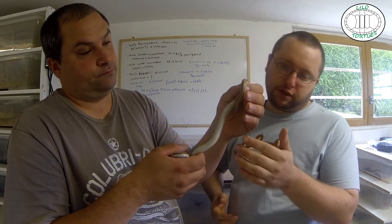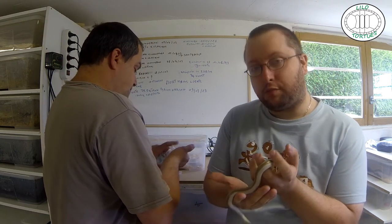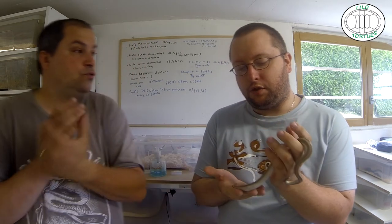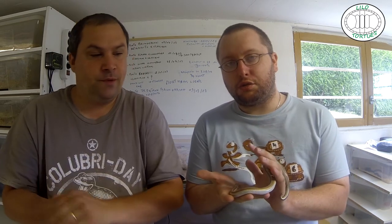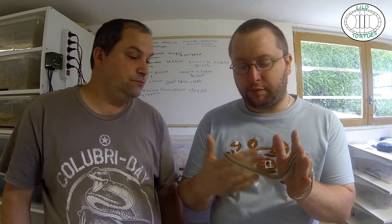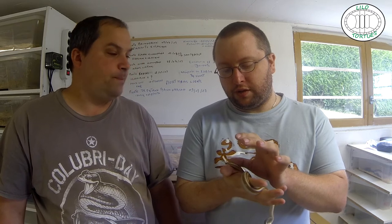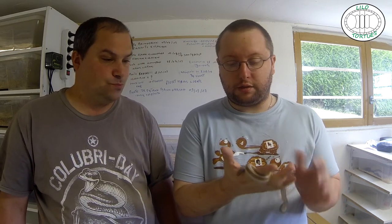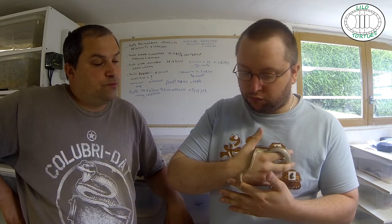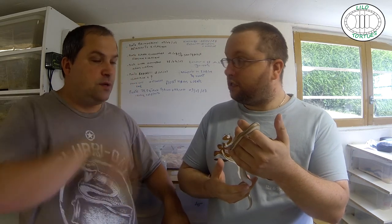On va essayer de manipuler un petit peu. Les manipulations avec les serpents, il faut laisser un peu où il faut aller et juste se servir comme si on était une branche, tout simplement. On peut le guider après. Il n'a pas l'habitude de manipuler, mais quand on voit, il est cool. C'est assez curieux comme serpent. Il regarde partout. Quand je regarde dans son bac, c'est assez actif aussi.